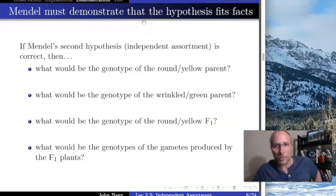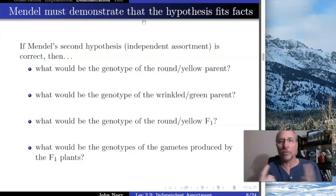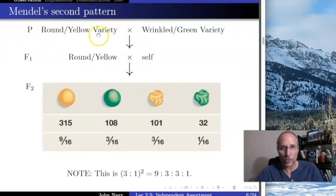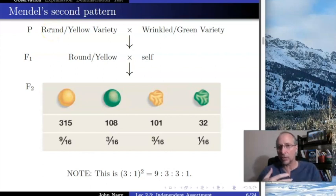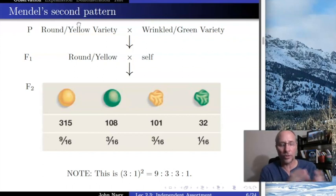Before we continue, let's think about this. Mendel's original statement, beyond being particulate, was that traits are determined by two copies of the same gene — they can be different alleles, but still two copies. One copy comes from one parent, the other from another parent. Using that, we can figure out the genotype of the round yellow parent. Round could be determined by either a homozygote or heterozygote because round was dominant — so round could be big R big R or big R little r. Same with yellow: big Y big Y or big Y little y.